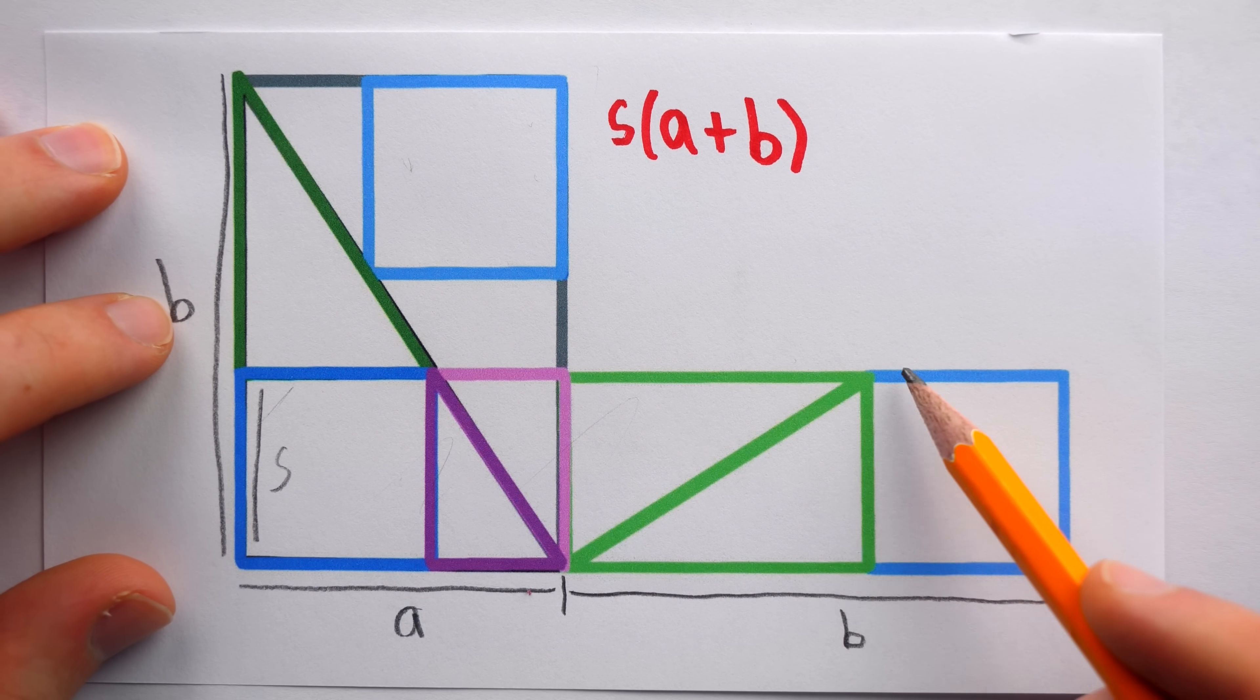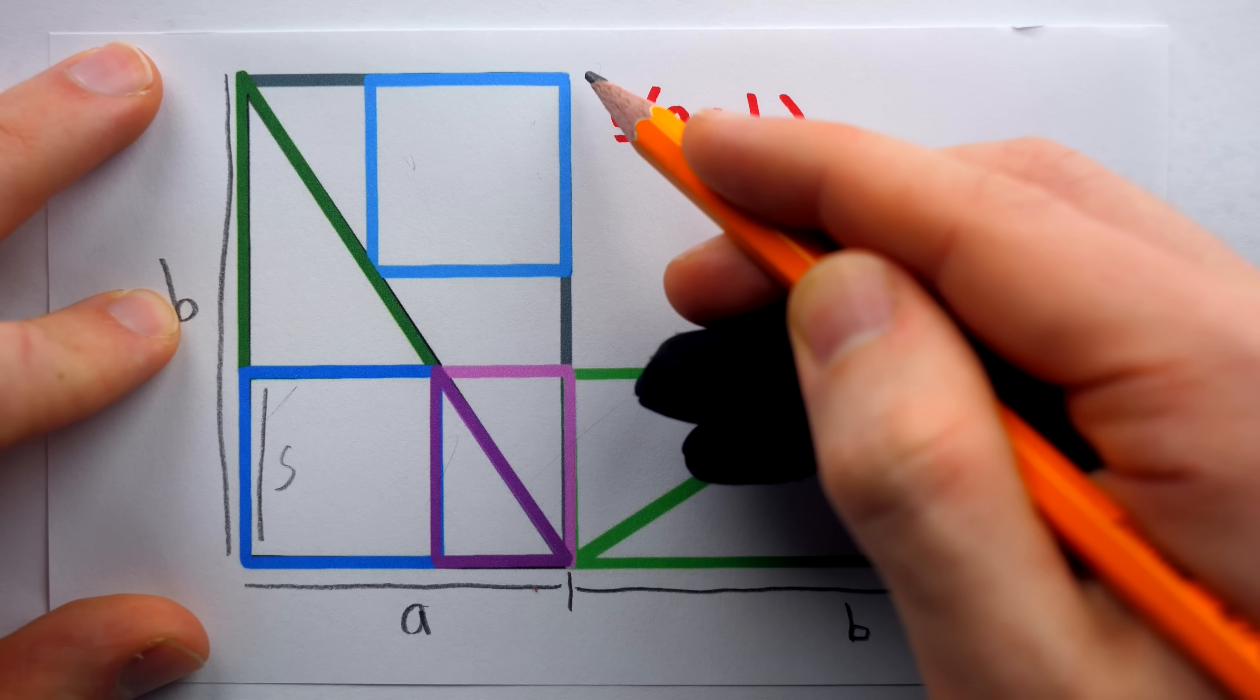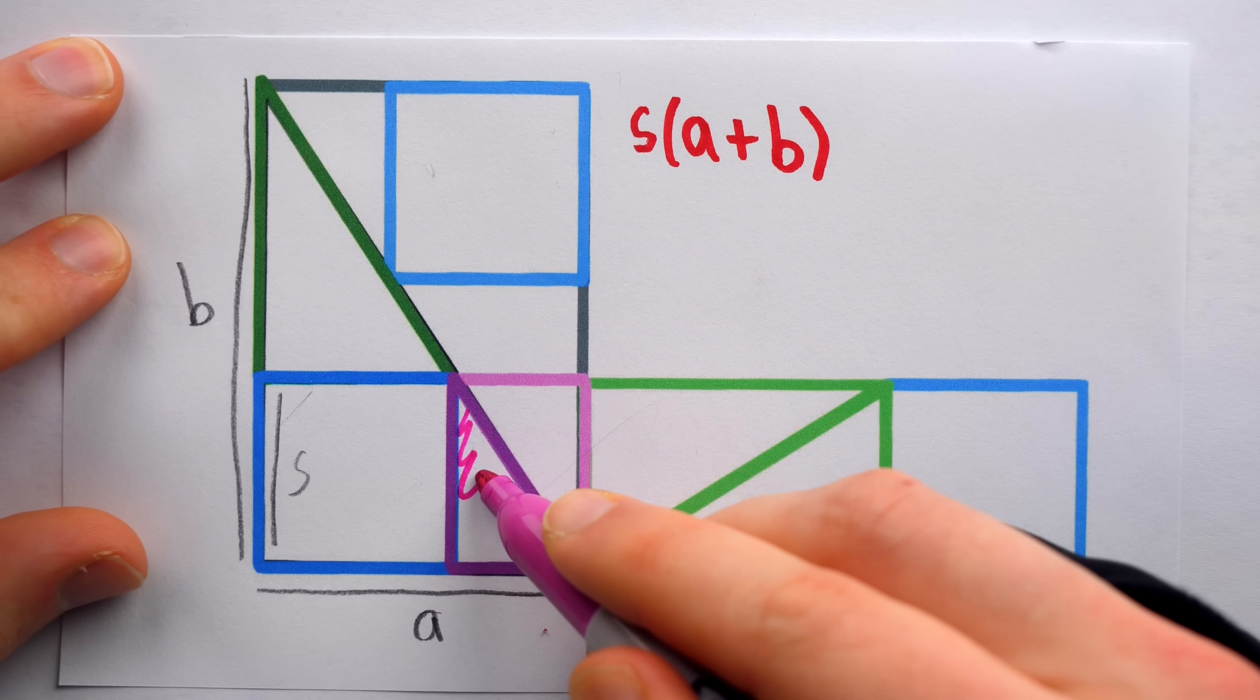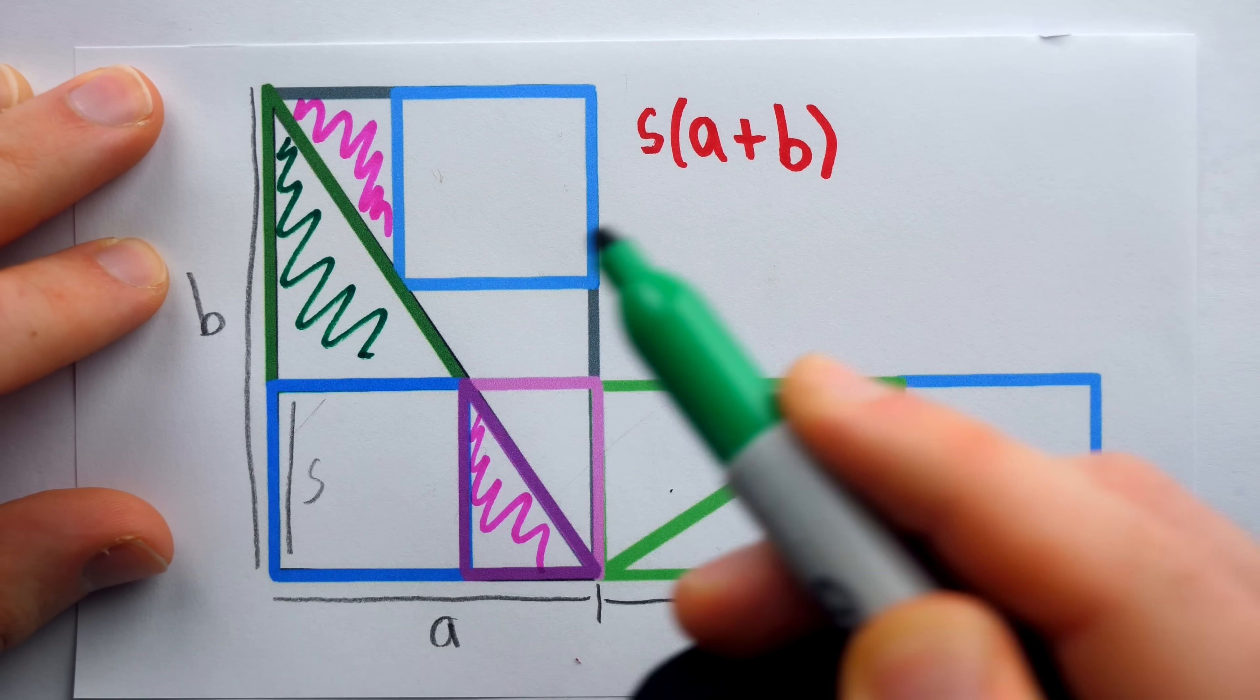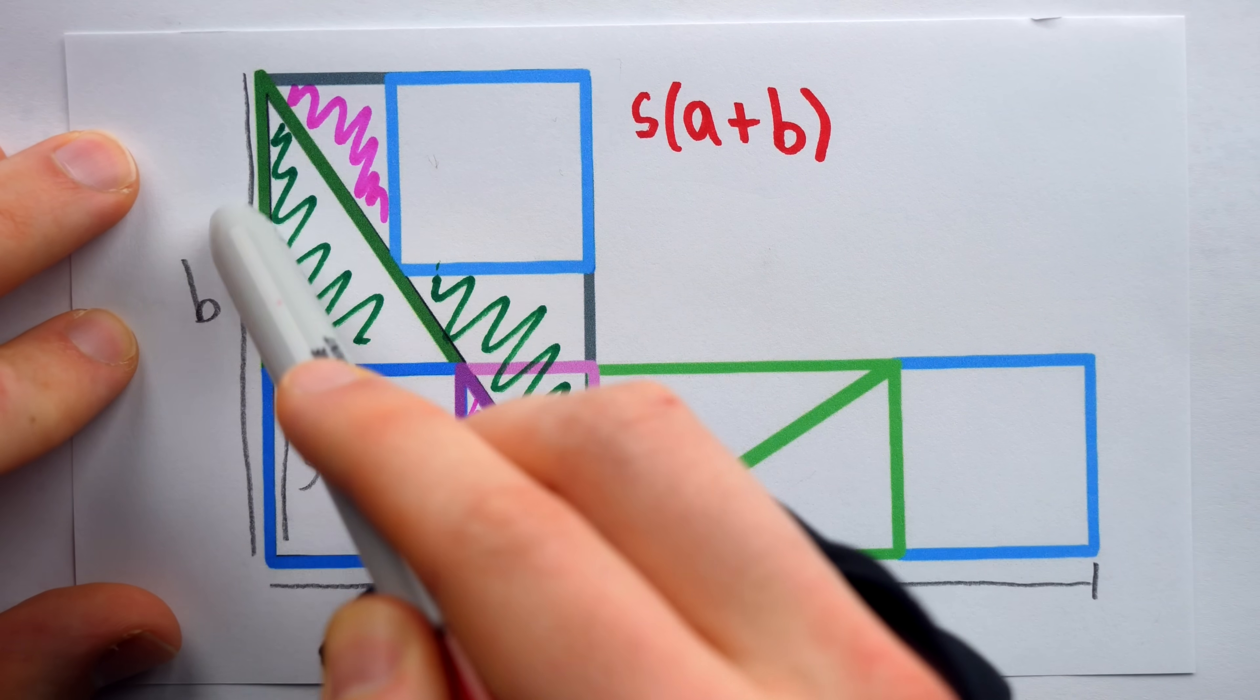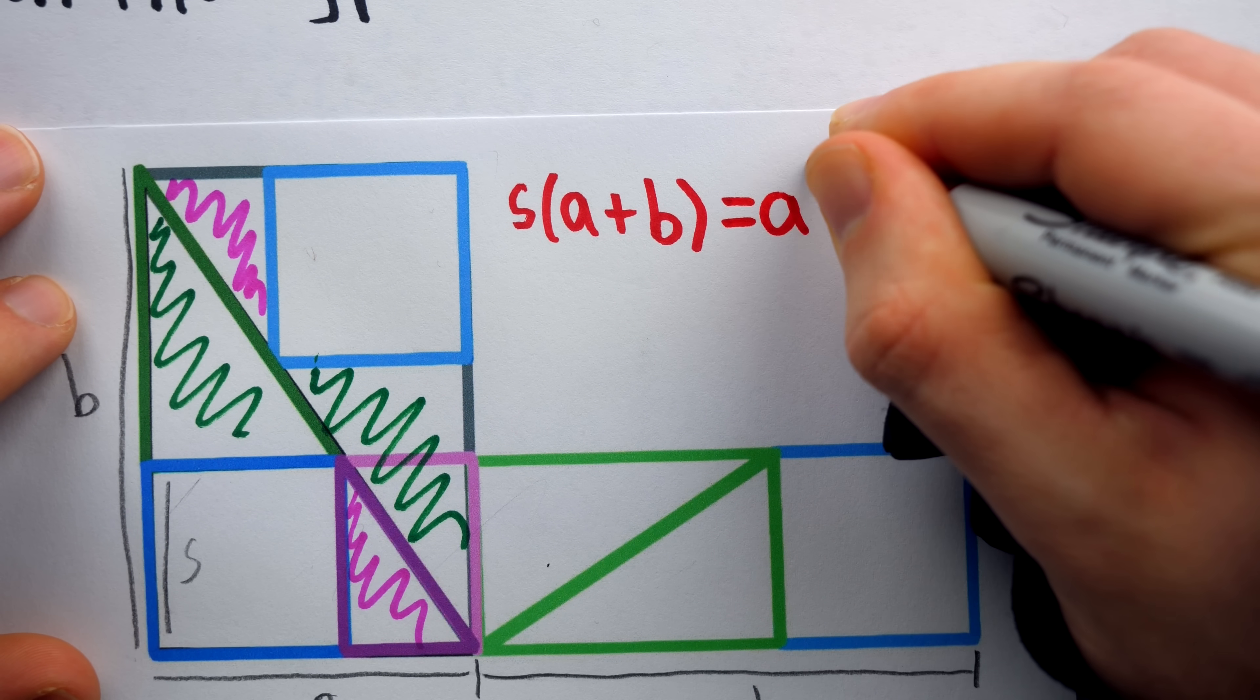Well, it's made up of two blue squares, two of the little purple triangles, and two of the bigger green triangles. That is, in fact, exactly what this A by B rectangle is made up of. The A by B rectangle is made up of two blue squares, two of the purpley-pink triangles, one here and one over here, and two of the bigger green triangles, one here and one here. Because this long rectangle with an area of S times A plus B is made up of the same exact components that this rectangle with an area of A times B is, we know those areas are equal.